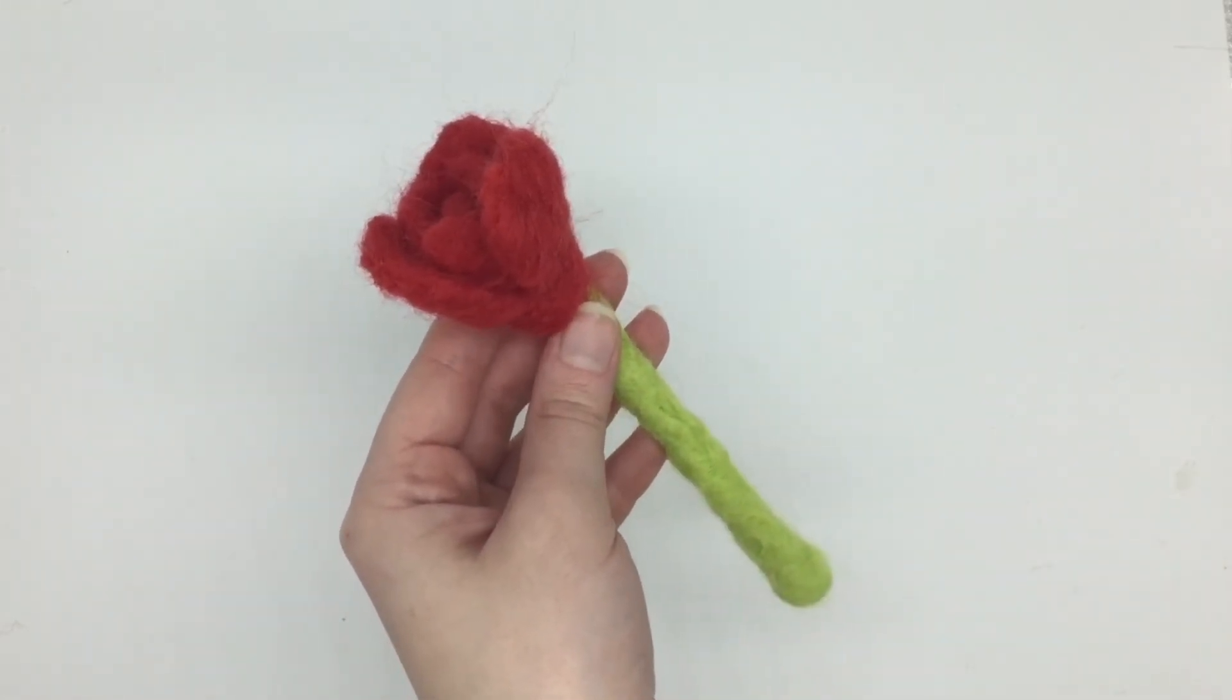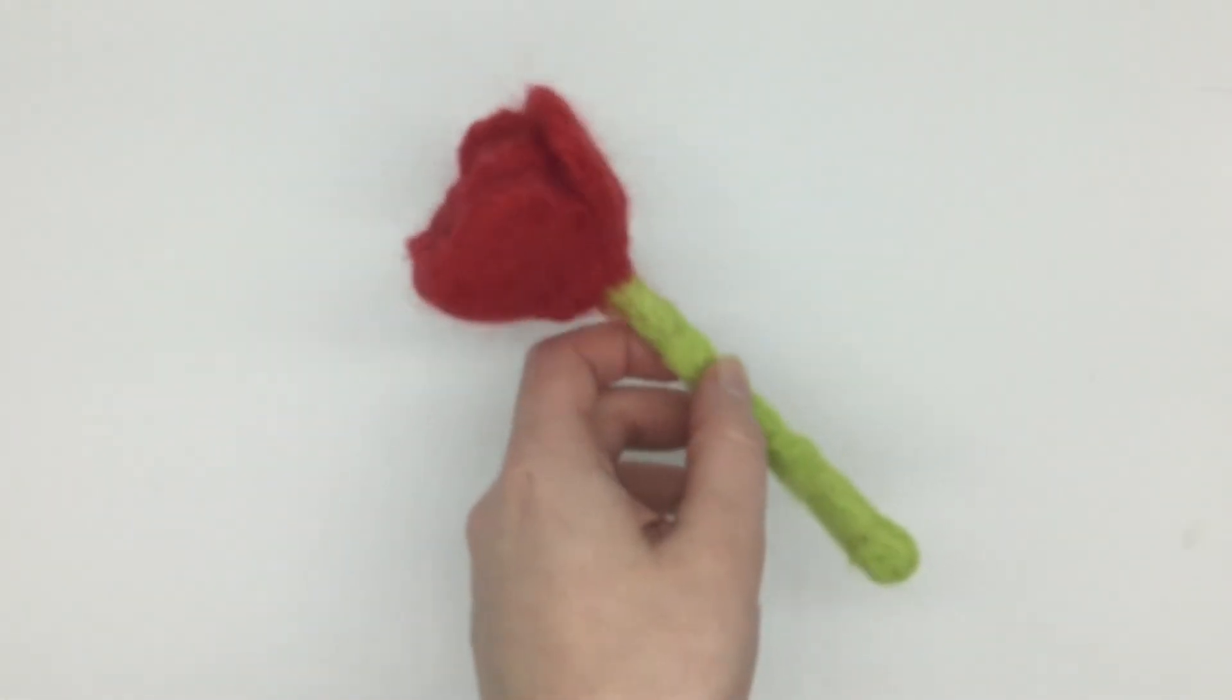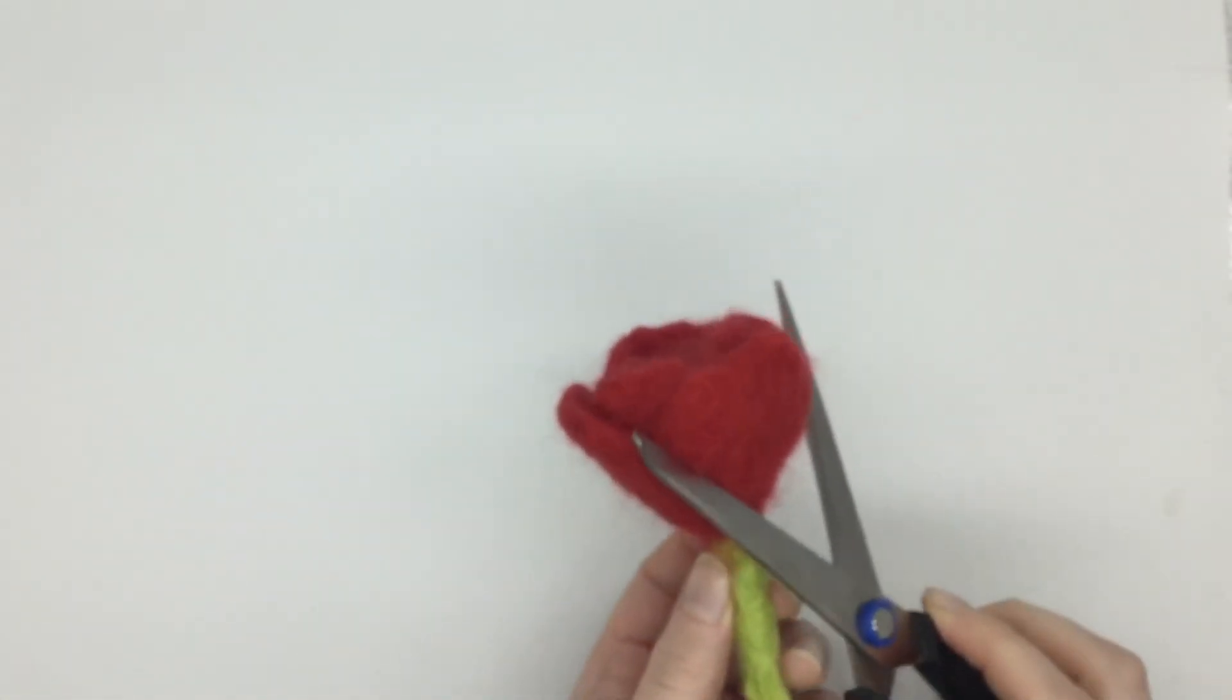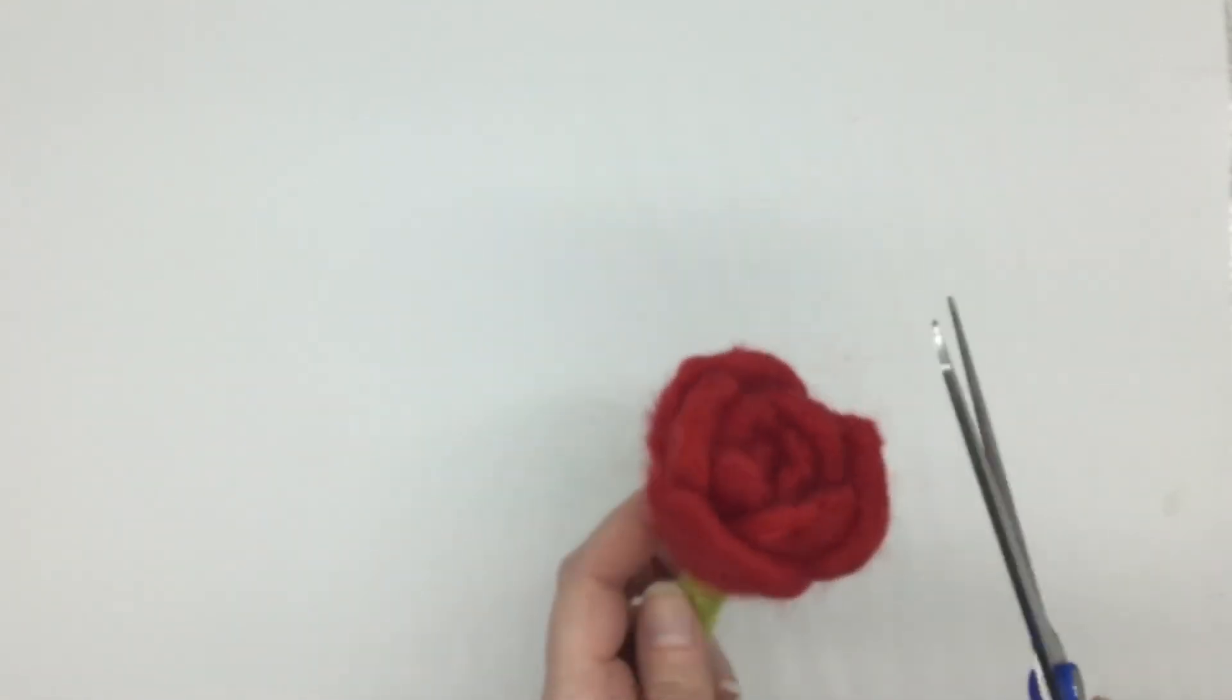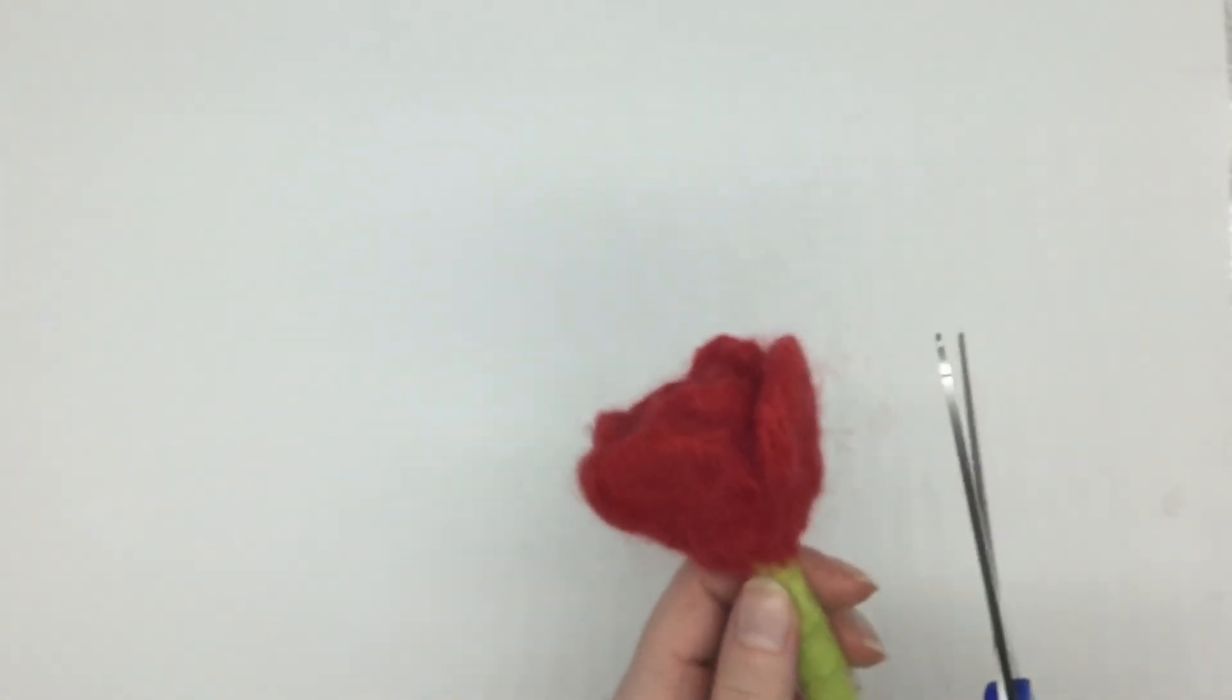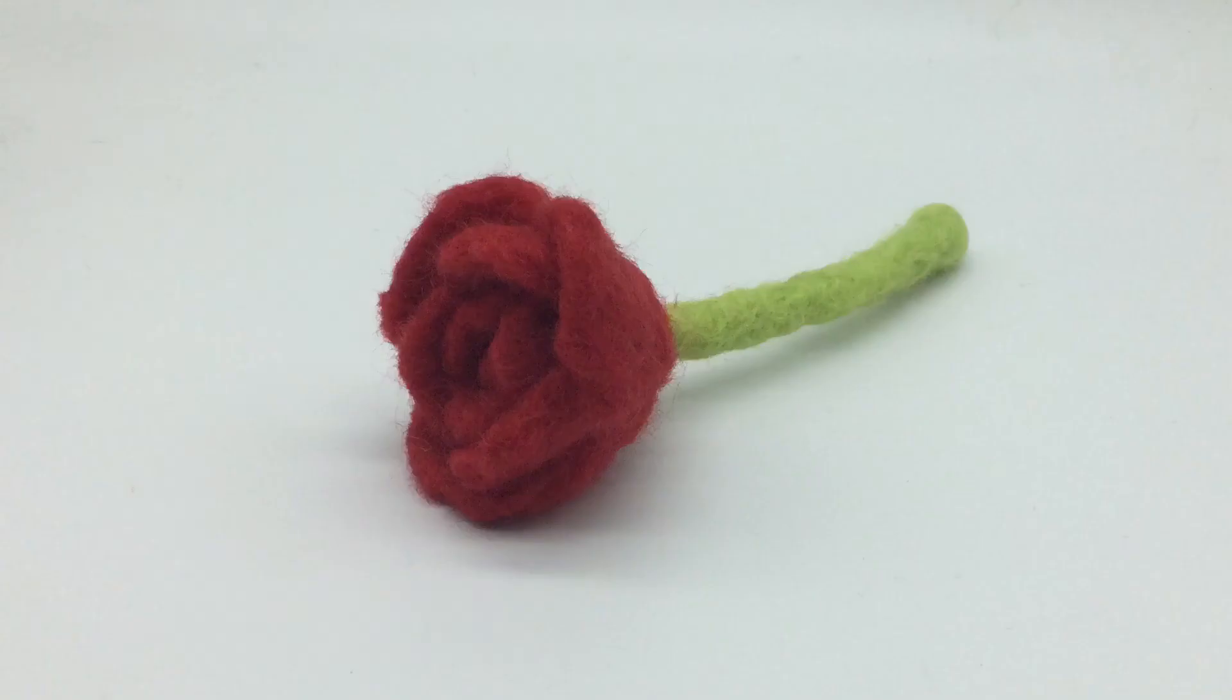Basically what you're doing is repeating the same process each time, just making the petals bigger. Now I'm just going to use some scissors to trim all the loose fibers from the rose just to make it a bit neater. This is the finished result. If you have any questions about making this rose, please just leave them in the comments section below and I'll be back next week with a new video on felting. Don't forget to like and subscribe.